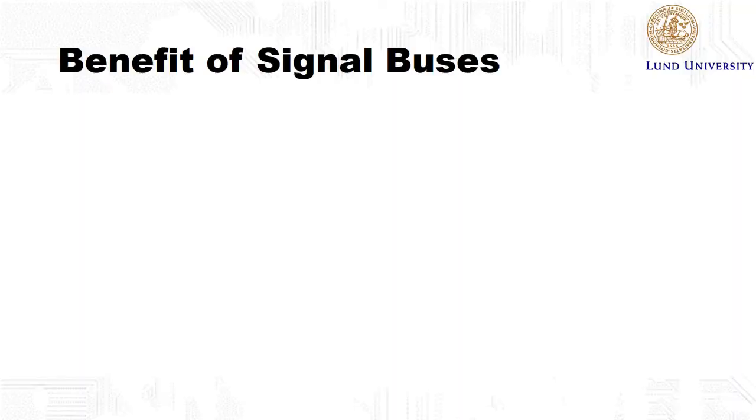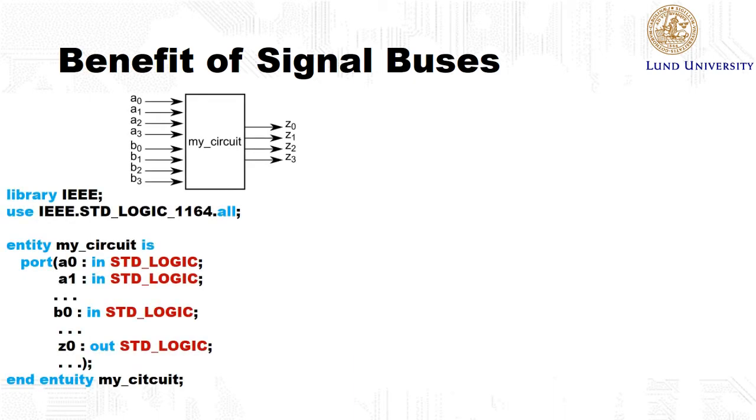So what is the benefit of using signal buses, and when should we use them? Imagine that we have a circuit with a number of inputs, A0 to A3, B0 to B3, and some outputs Z0 to Z3.